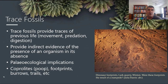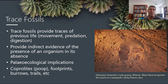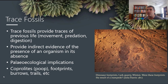Trace fossils are not a record of whole organisms or even parts of organisms — they are just traces. They give us some indication of what was happening in previous life, and they tend to fall into one of three key categories: traces of movement of once-living organisms, traces of predation, and traces of digestion. Trace fossils provide indirect evidence of the presence of an organism in its absence. We may sometimes find bones or shells fossilised near these trace fossils, but not always — so trace fossils can give us an indication of organisms that were present in a certain area, even without direct fossil evidence.